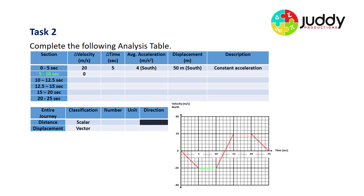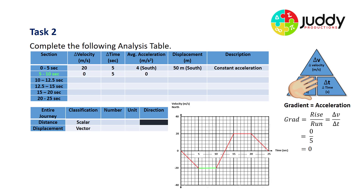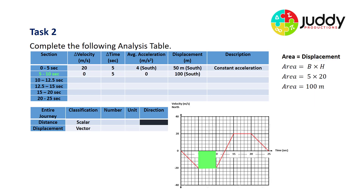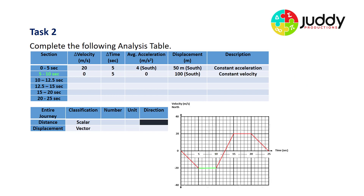The next five seconds: no change in velocity, constant velocity traveling for five seconds. The gradient is zero — no acceleration. However, displacement exists while traveling at constant velocity: 100 meters south, calculated from a base of five and a height of 20. The description is constant velocity in the southerly direction.